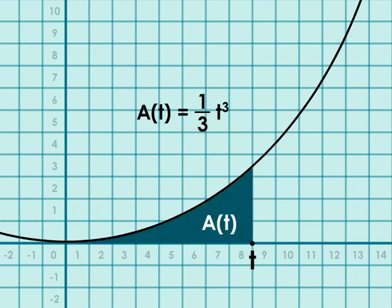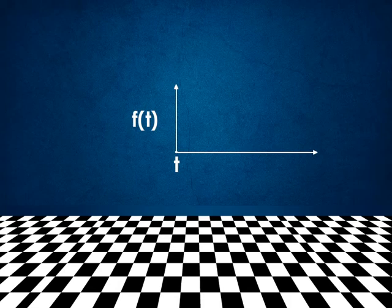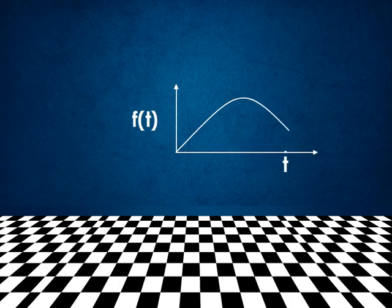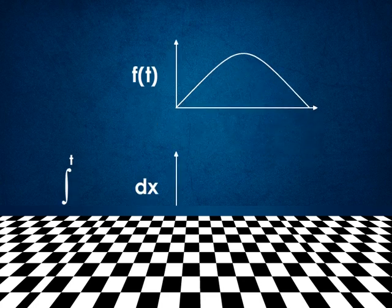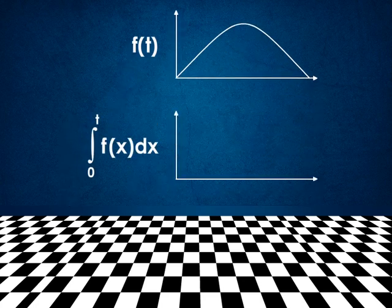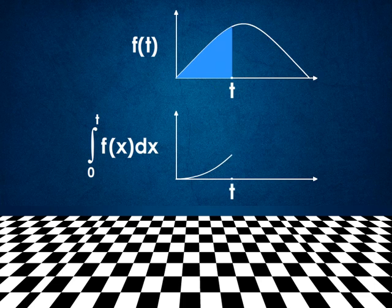Since the area is zero when t is zero, the constant is also zero. Integral of x squared from zero to t is one-third t cubed. Start with a function and integrate to get its area function. Then take the derivative of the area function. The result is the original function.